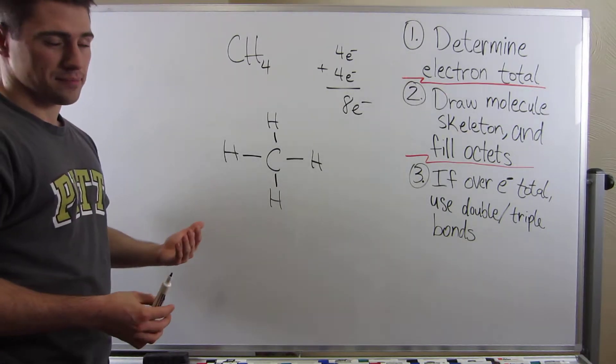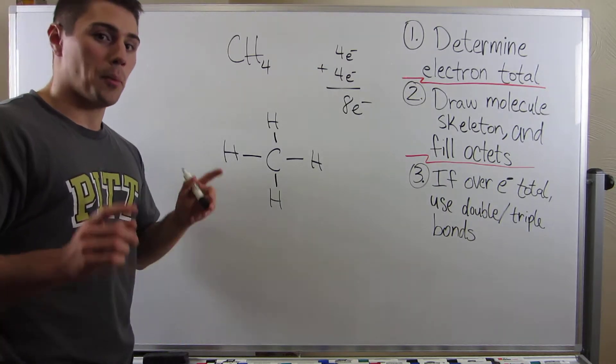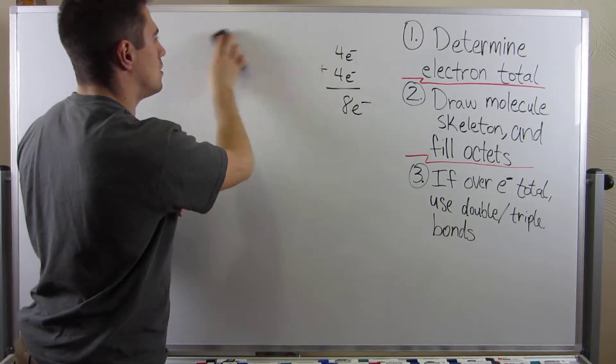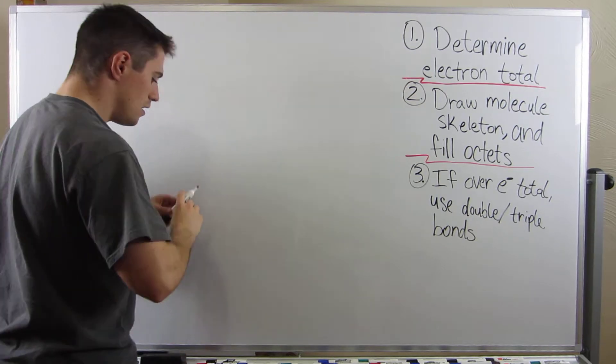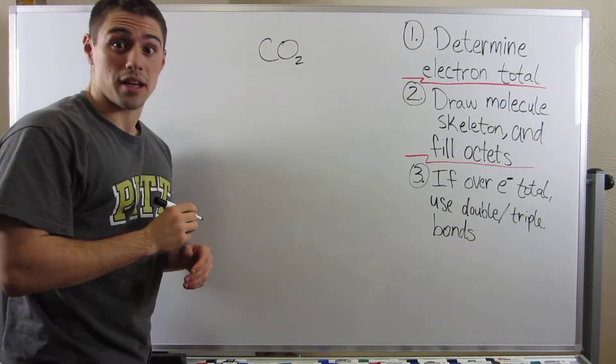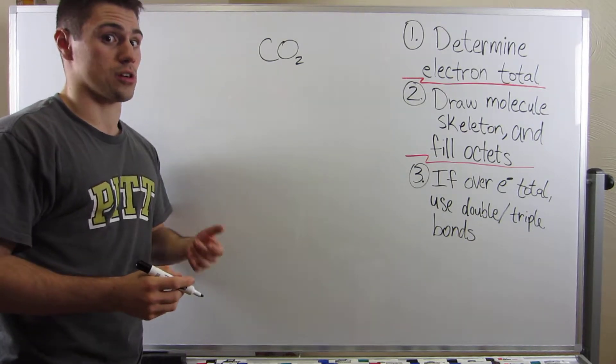I know what you're thinking—okay Joe, that was super easy. And I guess it was, but let's kick it up a little bit of a notch. Let's try something a little bit more interesting. Let's draw the Lewis dot structure for carbon dioxide.